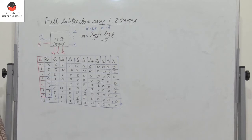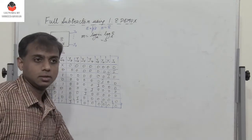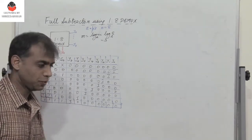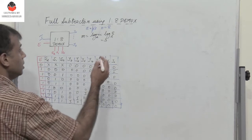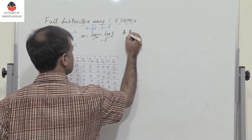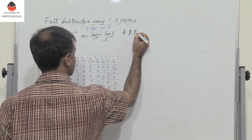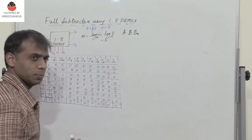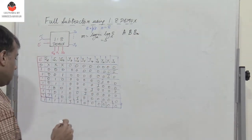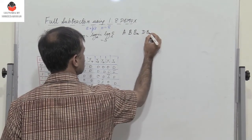Now how do we realize a full subtractor? For that we need the truth table of a full subtractor. A full subtractor has 3 inputs: A, B, and Bin (borrow input), and two outputs: difference and borrow out.